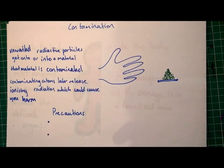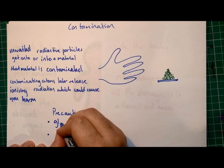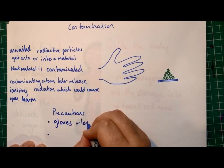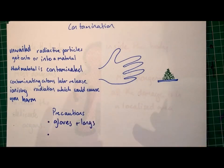There are two main kinds of precautions against contamination. The first one is that you'd be using gloves and tongs to handle radioactive sources. This keeps or prevents any of the radioactive material from getting underneath your skin or under your nails where it would stay for a while.